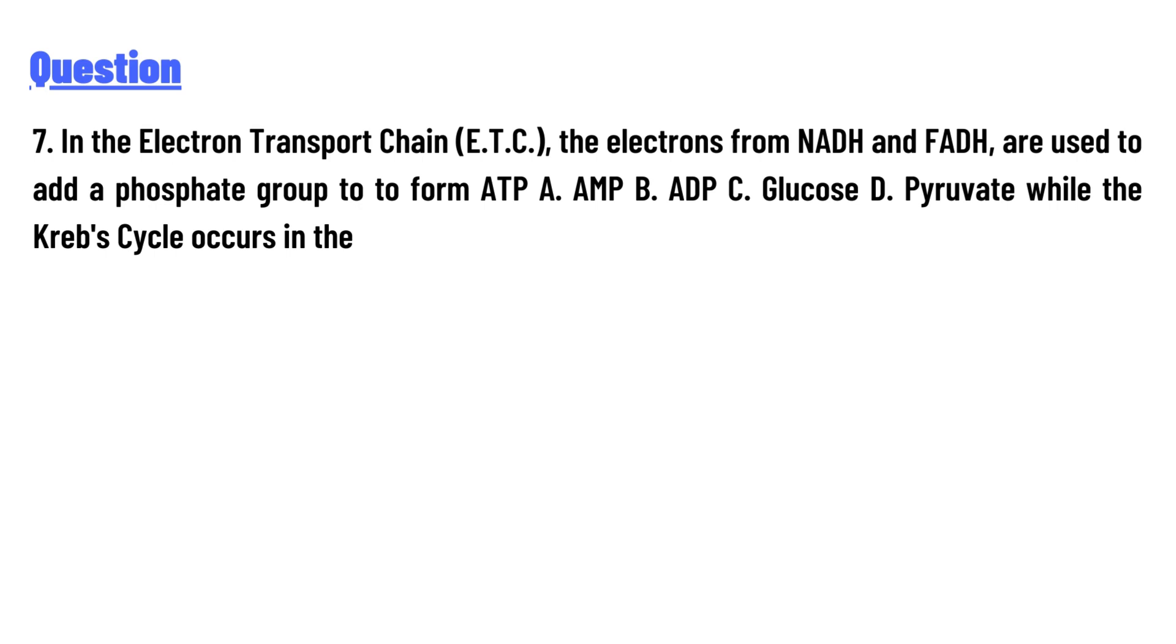electrons from NADH and FADH are used to add a phosphate group to form ATP: A. AMP, B. ADP, C. Glucose, D. Pyruvate, while the Krebs Cycle occurs in the